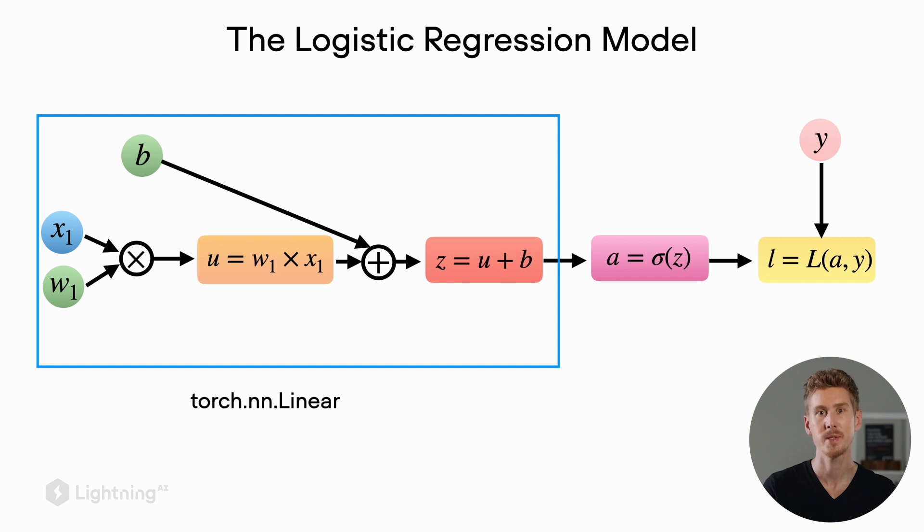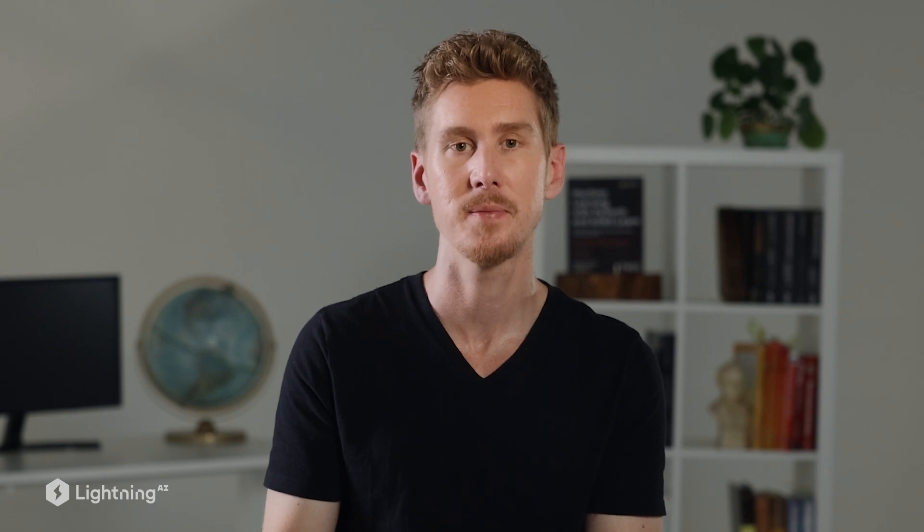Let's take a look at a code example to see how nn.Linear works. Suppose we have this linear layer to compute the weighted sum with two input features x1 and x2, so we set in_features equal to 2, and we have one output feature in this case because we have one weighted sum.